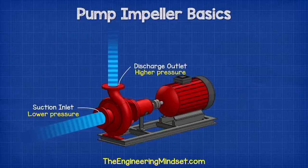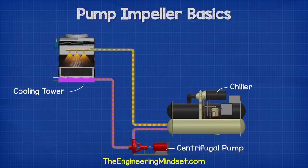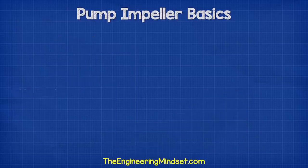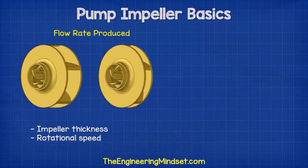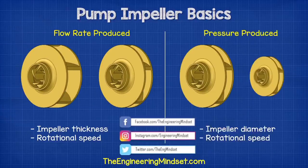The high pressure at the discharge allows us to force the fluid through pipes and into a storage tank or around a pipe system. The thickness of the impeller and the rotational speed affects the volume flow rate from the pump, but the diameter of the impeller and the rotational speed will increase the pressure it can produce.